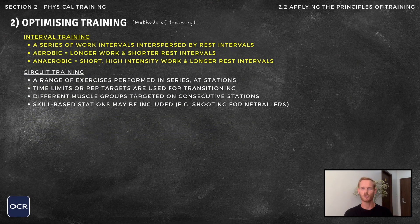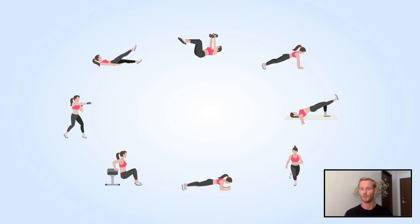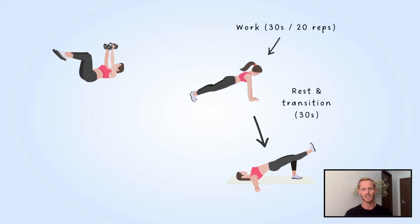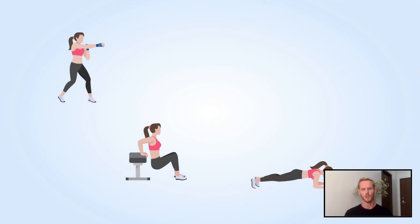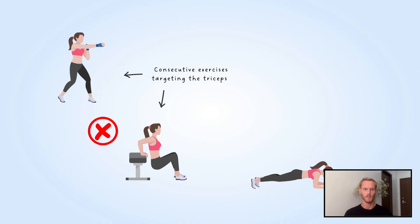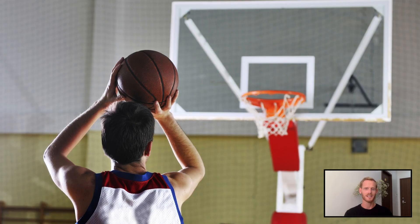Circuit training is an extremely versatile method of training, as a range of different exercises are combined in a single workout. A typical circuit training session may include 6–10 stations, and participants stay on a given station either for a set period of time or until they complete a predetermined number of repetitions. Once done, participants transition to the next station and repeat the process until the session is complete. It's important to ensure that consecutive exercises target different muscle groups so that intensity and form can be maintained. Skill-based stations can also be incorporated, making circuit training an excellent choice for team sport athletes.